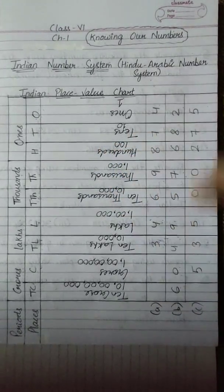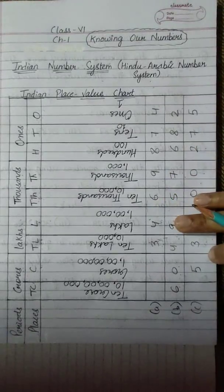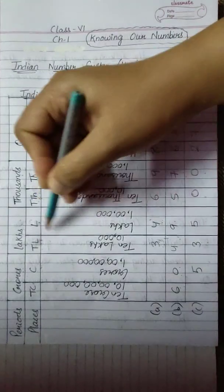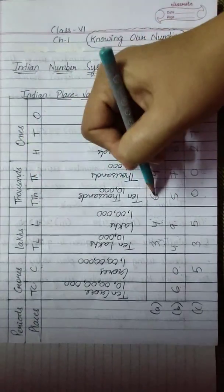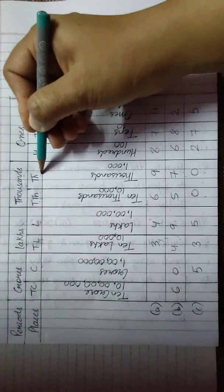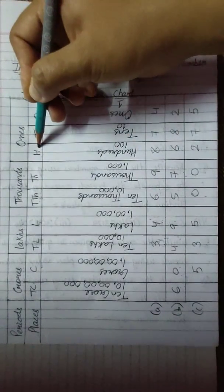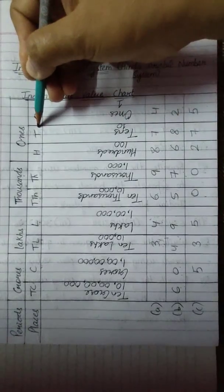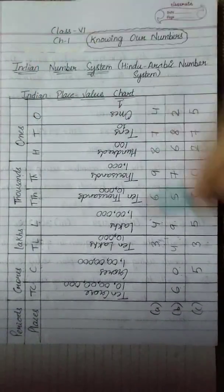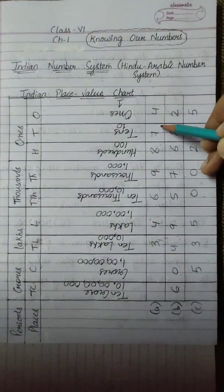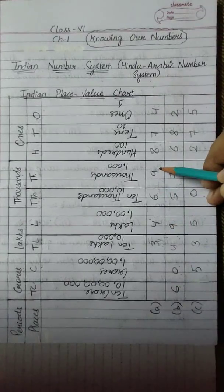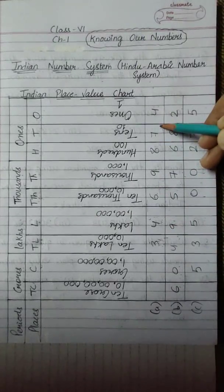Let us read these numbers. See one example. Here 3 is written in the ten lakhs column, 4 is written in the lakhs column, 6 is written in the ten thousands column, 9 is written in the thousands column, 8 is written in the hundreds column, 7 is written in the tens column and 4 is written in the ones column. So this whole number will be read as 34,69,874.